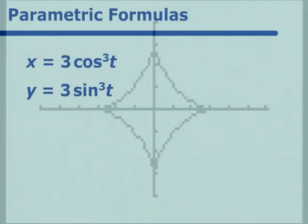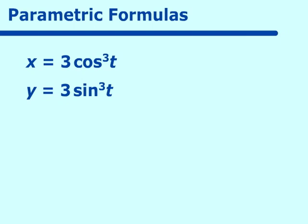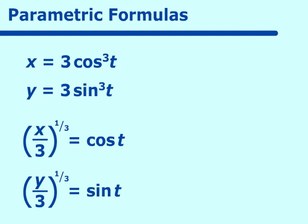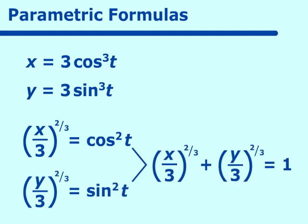And this is one of the curves that are used a lot in parametrics and for calculus. So let's look how we can develop its rectangular coordinate equation. x equals 3 cosine cubed t. So let's take the cubed root of both sides. So we have x over 3 to the 1/3 equals cosine t, and y over 3 to the 1/3 equals sine t. And of course, if we square both of these and add them together, we get x over 3 to the 2/3 plus y over 3 to the 2/3 equals 1. And that is your rectangular form for your hypocycloid.